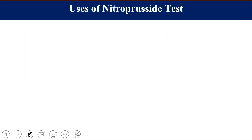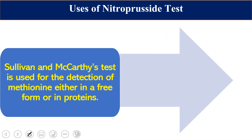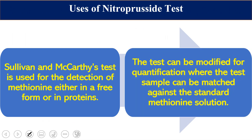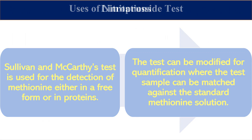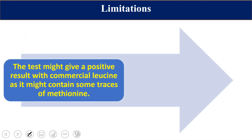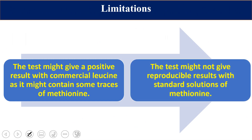This test is used to detect methionine either in free form or in the form of protein. The test can also be modified for quantitative use by matching the test sample against a standard methionine solution. However, there are limitations: the test might give a positive result with commercial leucine if it contains traces of methionine, and it might not give reproducible results with standard solutions of methionine.